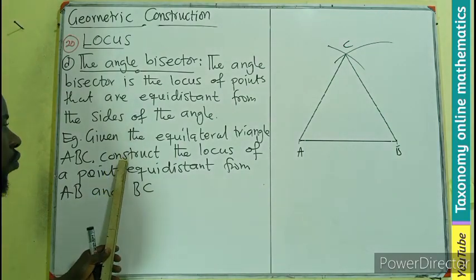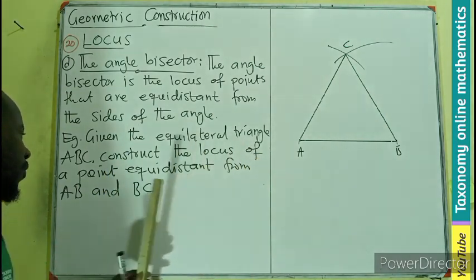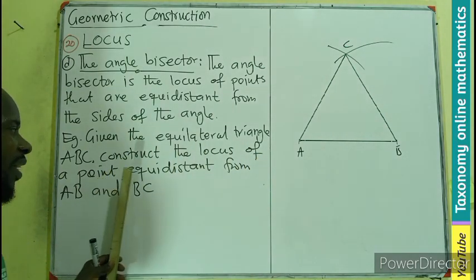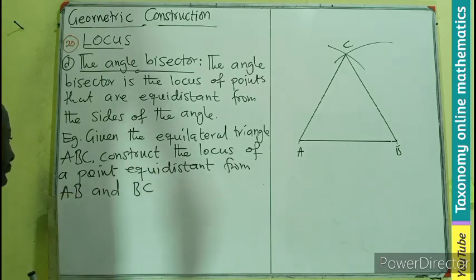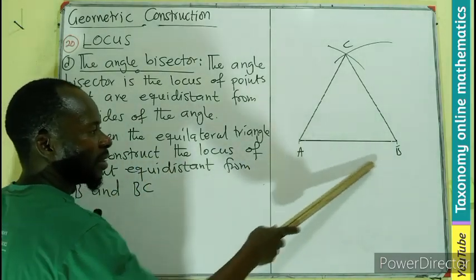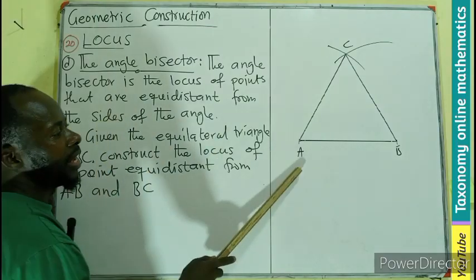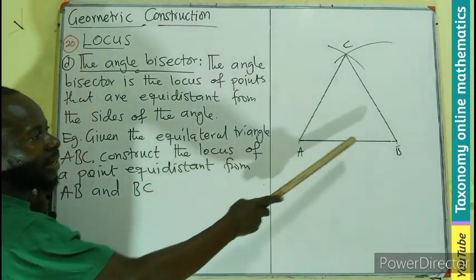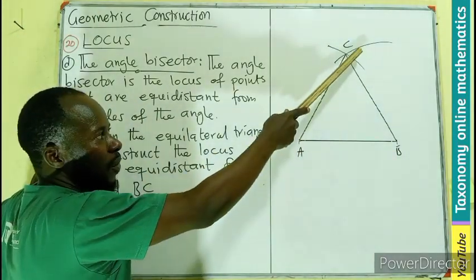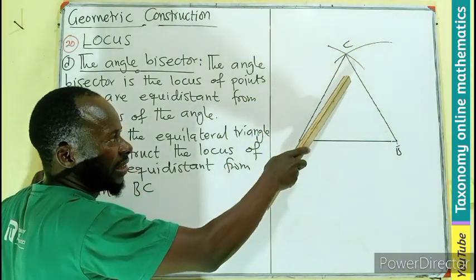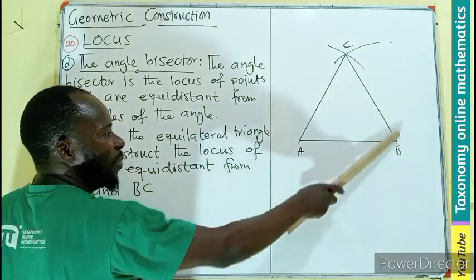Then the question would be: construct the locus of a point which is equidistant from AB, this is the side, AB and BC.